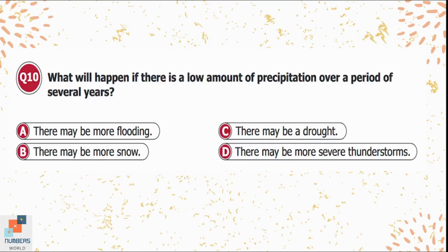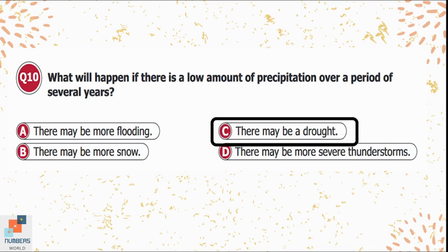Question 10: What will happen if there is a low amount of precipitation over a period of several years? A) there may be more flooding, B) there may be more snow, C) there may be a drought, D) there may be more severe thunderstorms. Low precipitation causes less rain, which may lead to a drought — option C is correct.